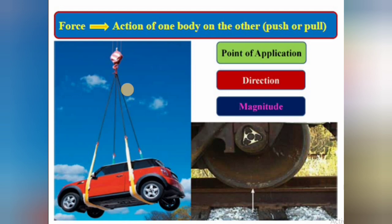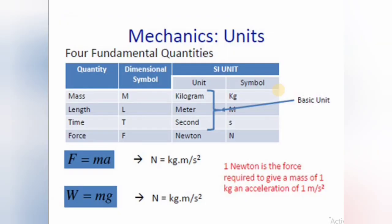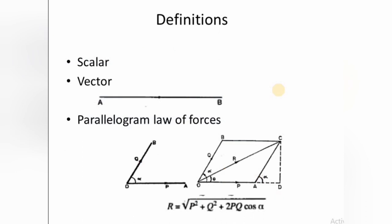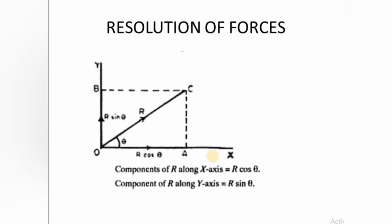We saw what a force is — force is the action of one body on another, either a push or a pull. A force is completely defined by three parameters: point of application, direction, and magnitude. We also saw what a couple is — two equal and opposite forces separated by a distance. Basic units and definitions were discussed, including scalars, vectors, parallelogram law of forces, and Lami's theorem, which states that if three forces acting at a point are in equilibrium, each force is proportional to the sine of the angle between the other two.